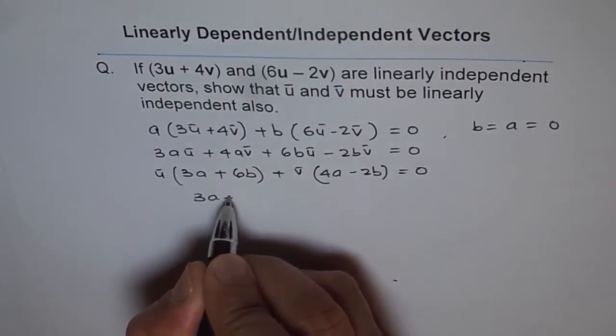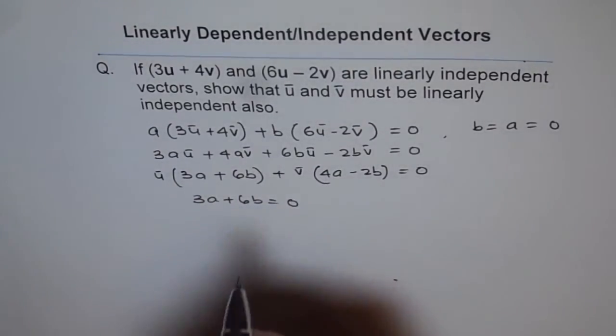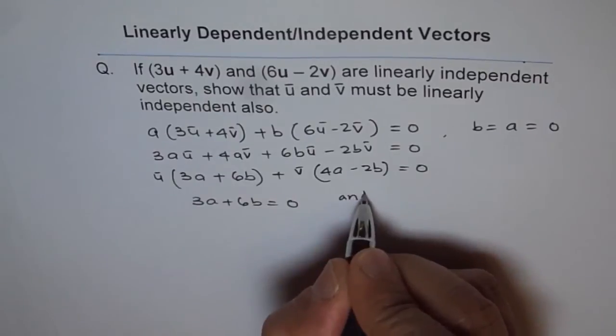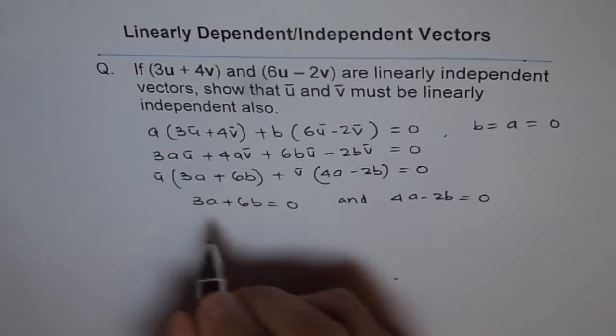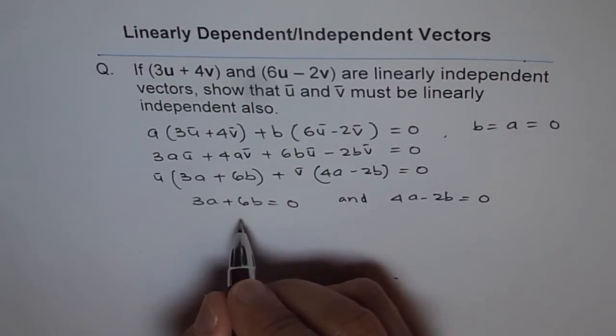3a + 6b = 0 and 4a - 2b = 0. Now when we solve for this we get: